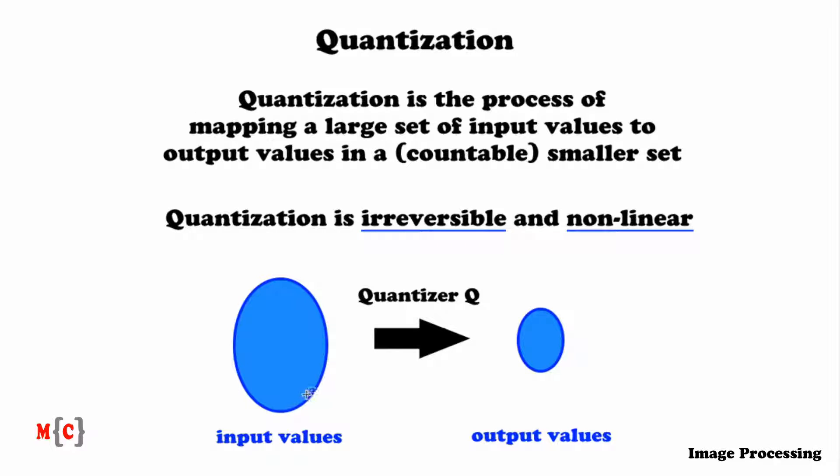Imagine that we look at a specific element within the input values. We're now going to map this value using quantizer q. Therefore, this value is mapped to this output value. Now, keep in mind that q maps a set that's larger to a set that's smaller. If we want to revert this action, we start with this element and we want to go back to where this input value came from, that there are multiple input values that correspond to this output value.